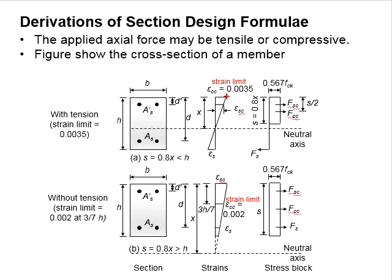Assuming the strain is linear across the cross-section of the column, the strain of the steel bar here can be obtained through interpolation. The x here refers to the position of the neutral axis.